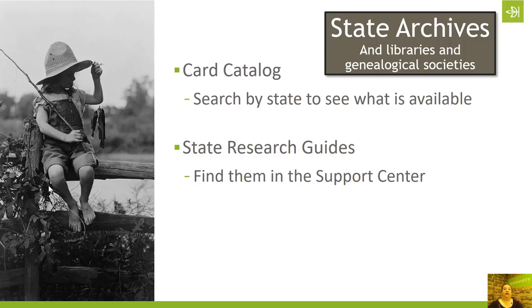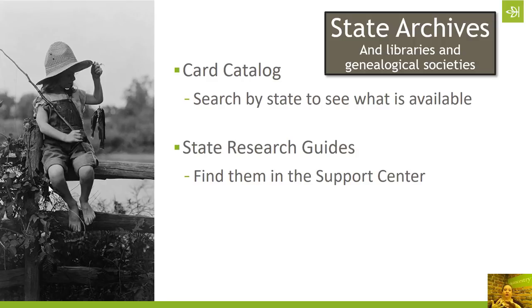To see what is and is not available at all — online at the archive's website, or offline in the archive itself — Ancestry has created a series of free state research guides. We've created one for every state, Washington DC, Puerto Rico. We've started creating some for other countries. We have research guides for different ethnicities, for doing research in African American records or Jewish records. These state research guides are a really great resource.